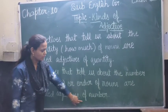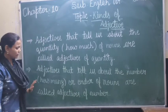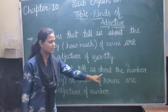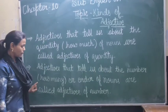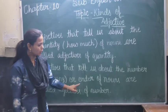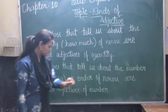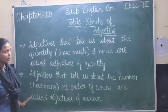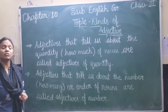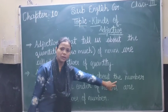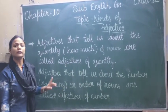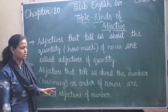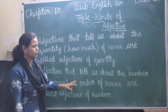Second is adjectives of number. Adjective of number kya hoga? Adjectives that tell us about the number — how many or order of nouns — are called adjectives of number. Iska matlab hai jise aap count kar sakte hain. Like 1 pencil, 2 pencil, 3 pencil, 1 book, 2 book.